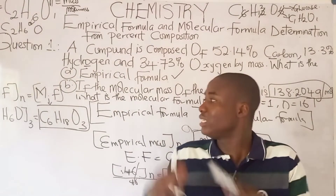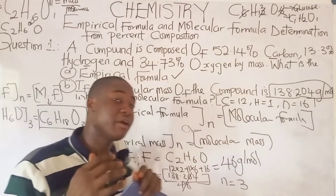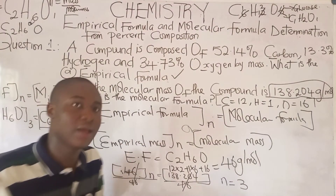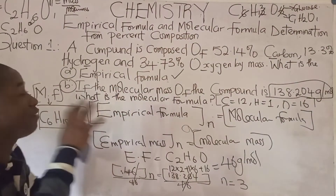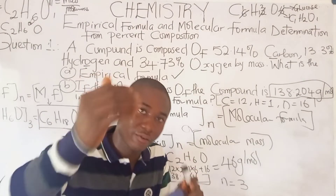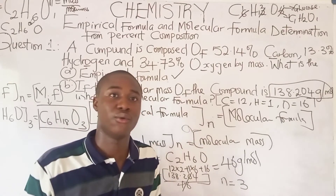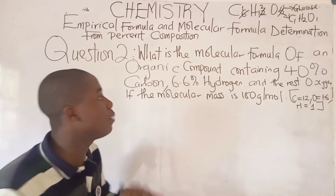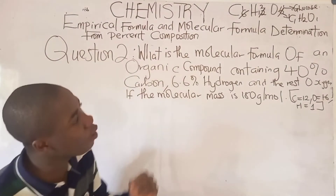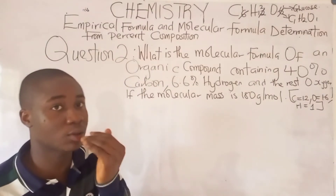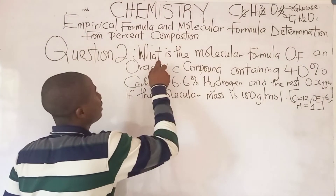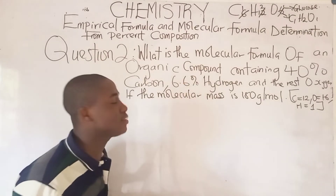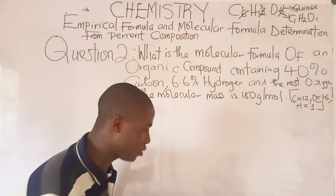This aspect is very interesting and very easy — just follow the right pattern and solve to get the correct answer. Now I'm going to provide a second question for you to try and provide the answer in the comment section below. Question 2 asks: what is the molecular formula of an organic compound containing 40% carbon, 6.6% hydrogen, and the rest oxygen?